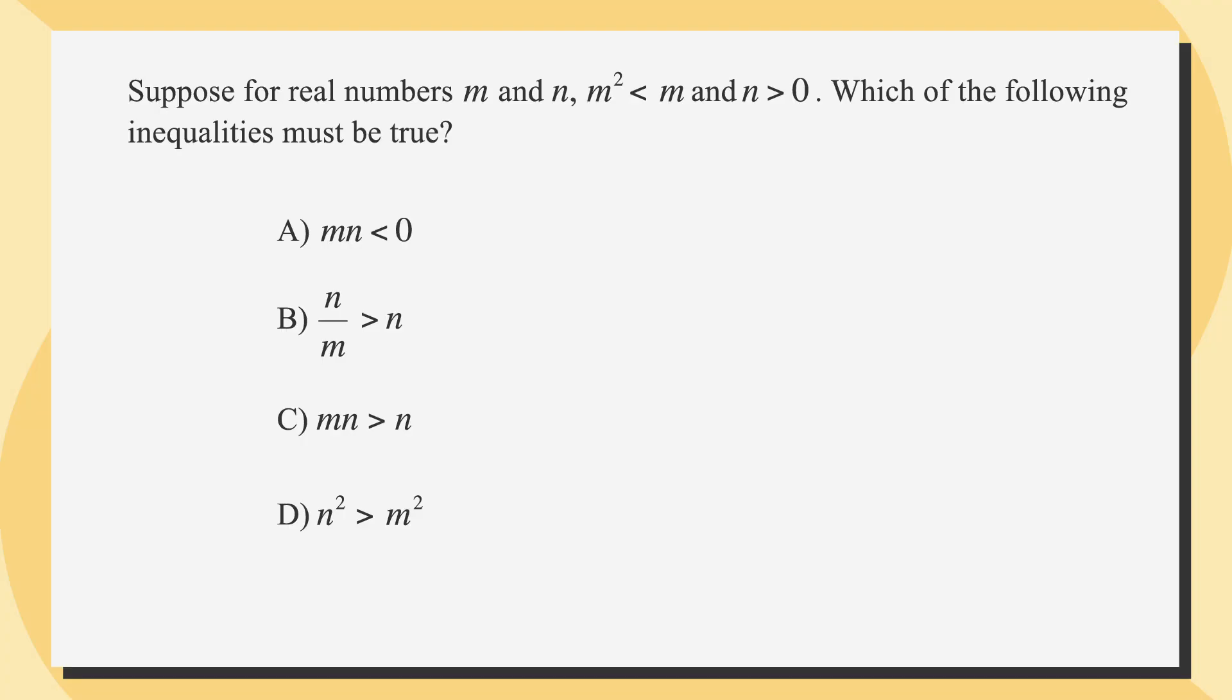Suppose for all real numbers m and n, m² is less than m, and n is greater than zero. Which of the following inequalities must be true? First we'll underline the facts, circle the key terms, and label the answer choices.